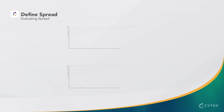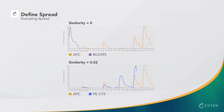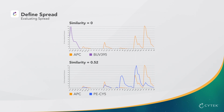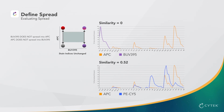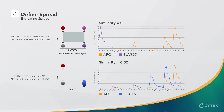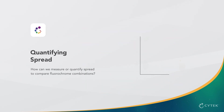Let's look at how the stain index can change depending on spread. Using BUV395 and APC as an example, there is no change in the stain index because they do not spread into each other. However, if PEC5 is used instead of BUV395, APC receives significant spread and its stain index is decreased.